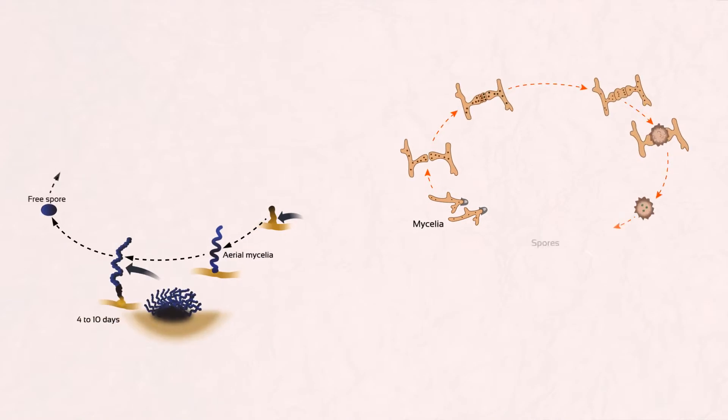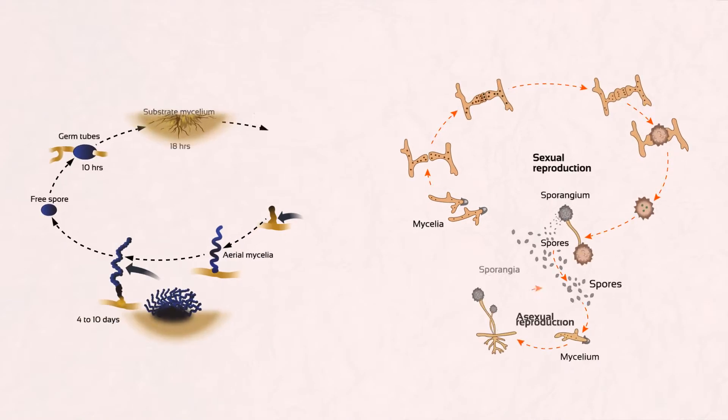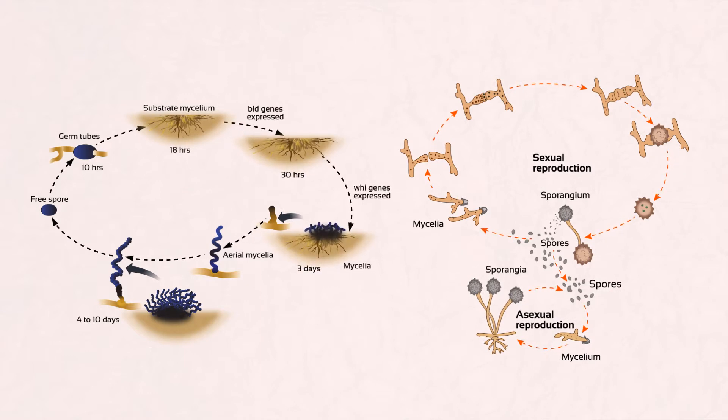However, liquid cultivation of filamentous microorganisms such as fungi and actinomycetes impairs their normal life cycle and therefore the production of valuable compounds.